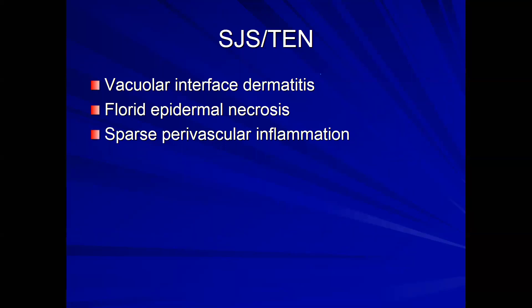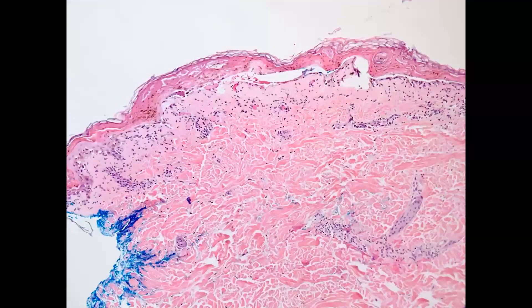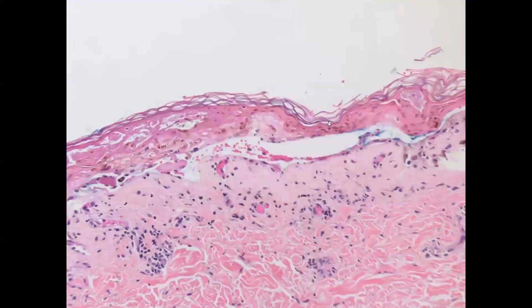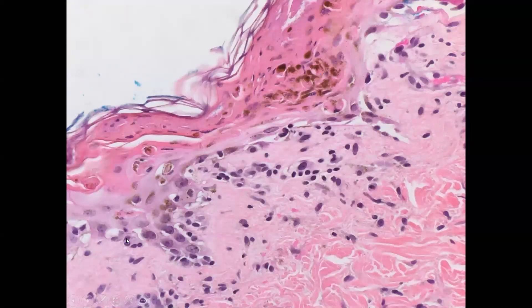SJS-TEN also falls in the subepidermal split category. It begins with an interface pattern: lymphocytes cause damage to the DEJ, necrosing the epidermis in a florid pattern. All you see is necrosis of the epidermis. Going up close, you see lymphocytes causing vacuolar alteration and necrotic keratinocytes at the DEJ — resulting in an acute hornified layer and acute necrosis of the epidermis. Those are the key features of SJS-TEN, distinguished on clinical criteria.